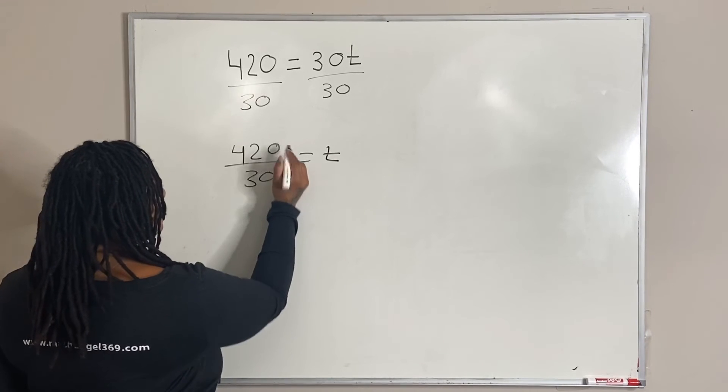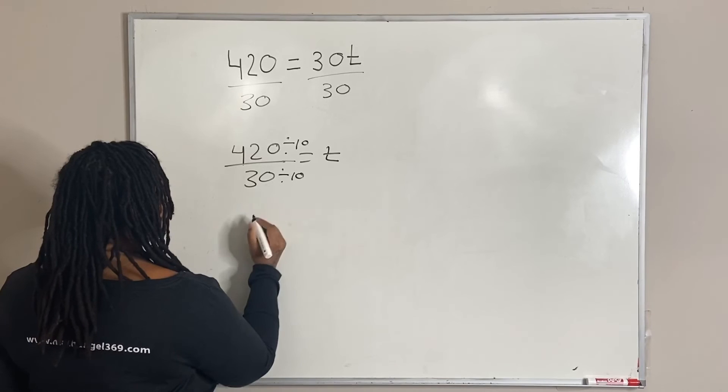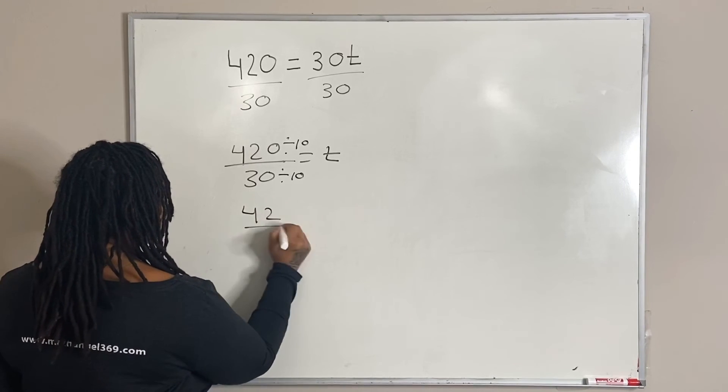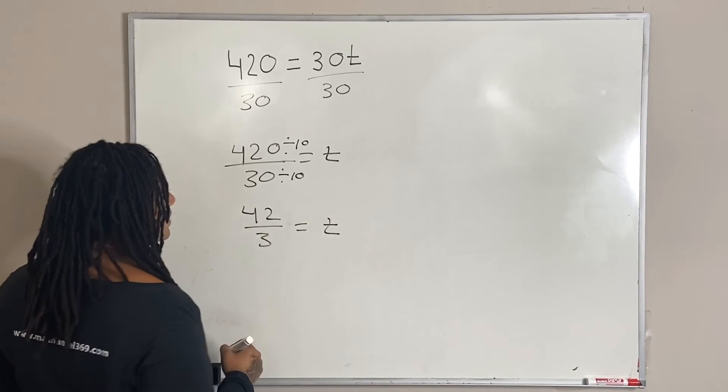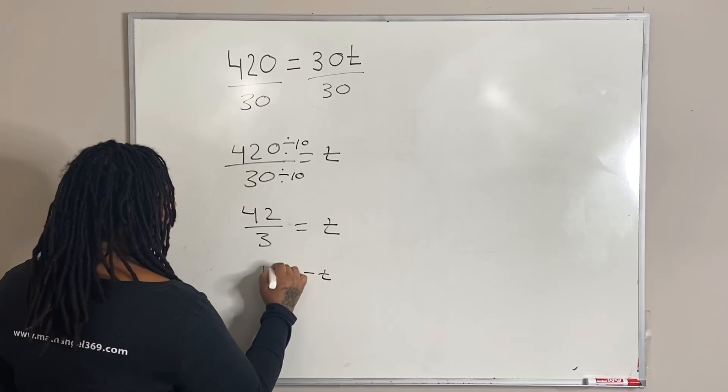And then what I'm going to do is I'm going to divide the top and the bottom by 10. And that will give us 42 over 3 is equal to T, and which means that T is equal to 14.